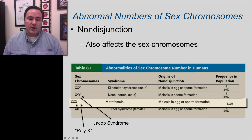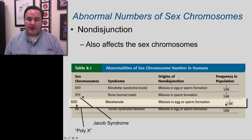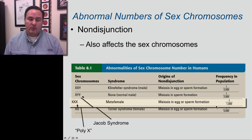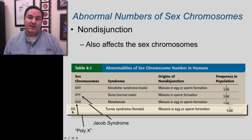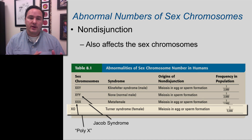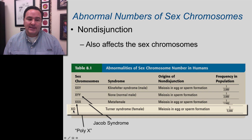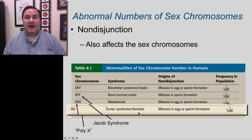Metafemales — this is where you have extra Xs, sometimes also referred to as the poly X condition — that occurs in 1 out of every 1,000. And then you can have the condition of the egg that is lacking one of the chromosomes, so you can actually get an XO — an X with nothing else — and that is called Turner syndrome. This is biologically a female but also has different problems.